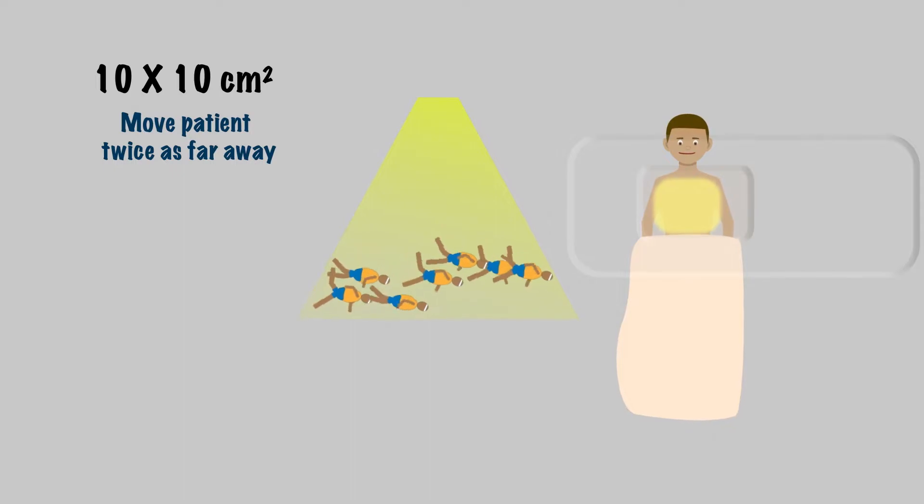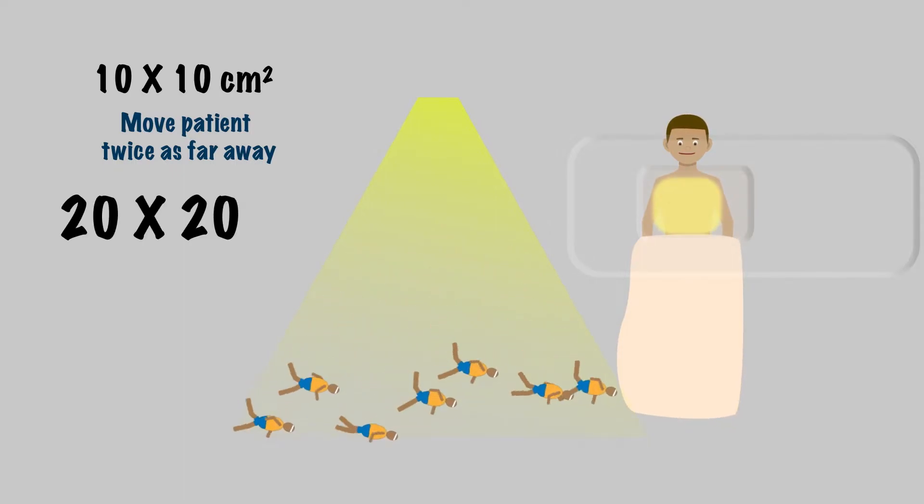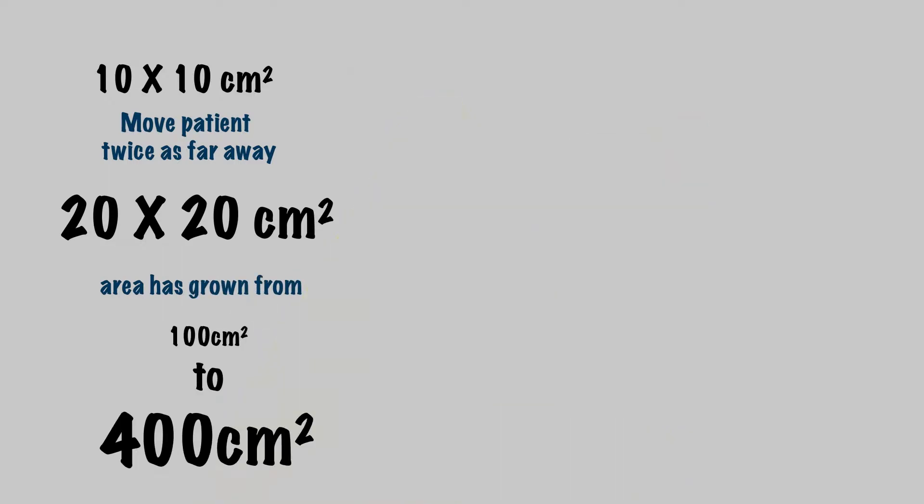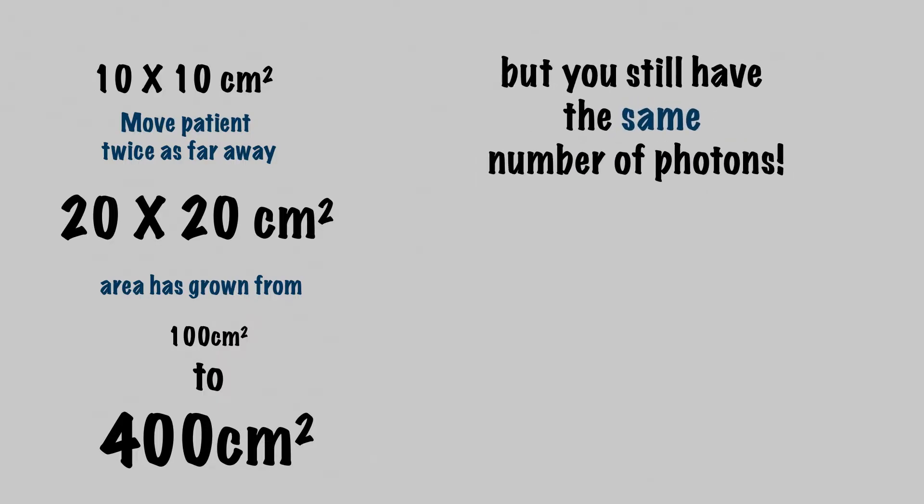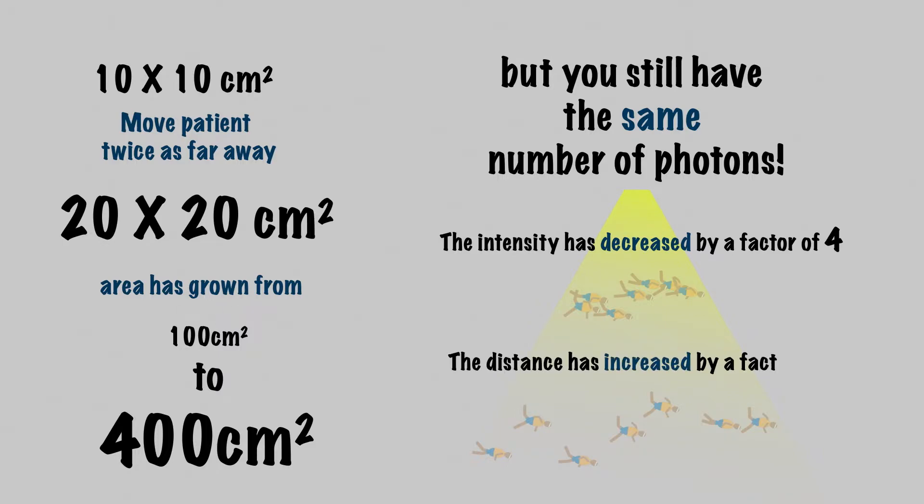Imagine using the collimator to shape a 10 by 10 centimeter squared field at the surface of the patient. Now if you move the patient twice as far away, this field will now be 20 by 20 centimeters squared. So the area of the field has grown from 100 centimeters squared to 400 centimeters squared, but you still have the same number of photons. Therefore, the intensity, or the number of photons per unit area, has decreased by a factor of 4, while the distance increased by a factor of 2.